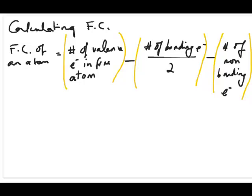Here is how we calculate formal charge for any atom. You take the number of valence electrons in the free atom, then subtract from it the number of bonding electrons divided by 2 for that atom in the structure you draw, and then subtract the number of non-bonding electrons for that atom as well.